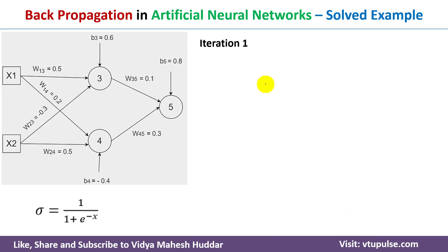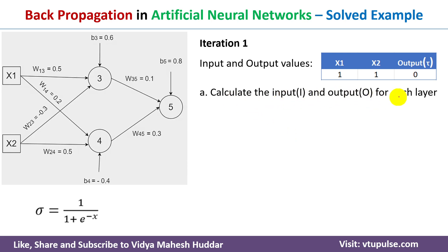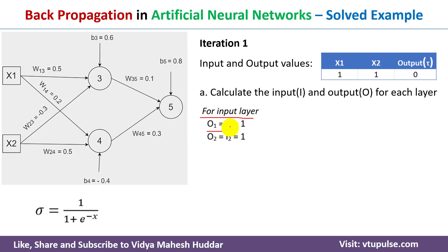In the first iteration, input and output values are known. First we need to calculate the input and output for each layer. Starting with the input layer: the output at x1 equals the input at x1, which is 1. Similarly, the output at x2 equals the input at x2, which is 1.